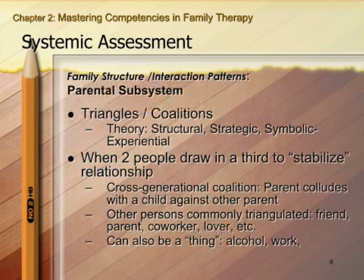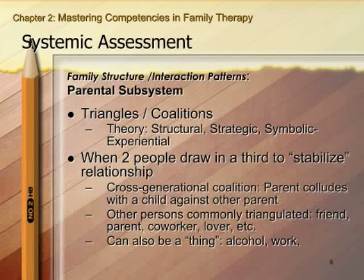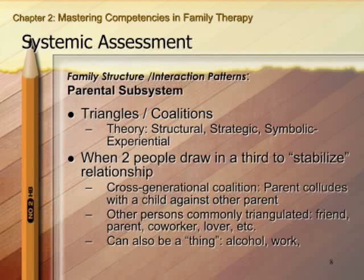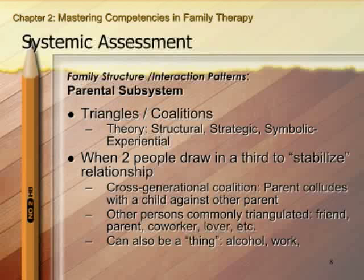The next area to assess in the parental subsystem are triangles and coalitions, especially highlighted in structural, strategic, and symbolic experiential approaches. A triangle or coalition occurs when two people in a relationship, in order to stabilize the tension between them, draw in a third person. Some conceptualize triangles as triangulating in a third thing such as alcohol or work. The most classic form is the cross-generational coalition, where a parent colludes with a child against the other parent.